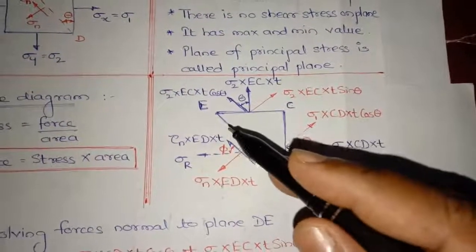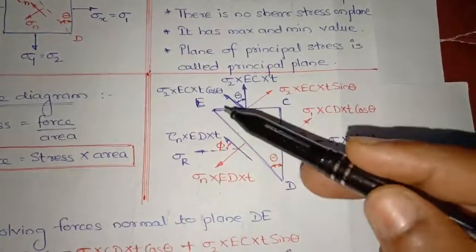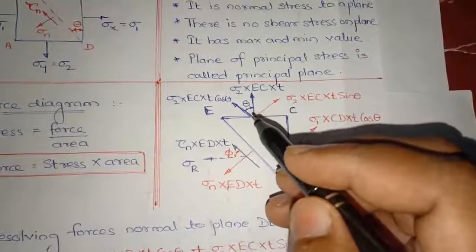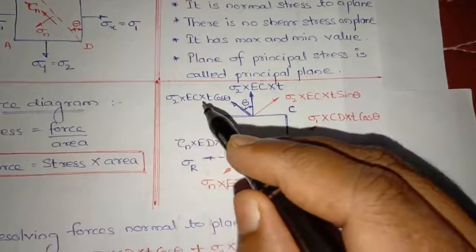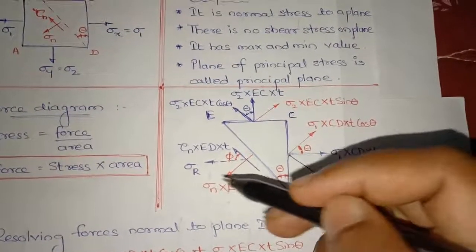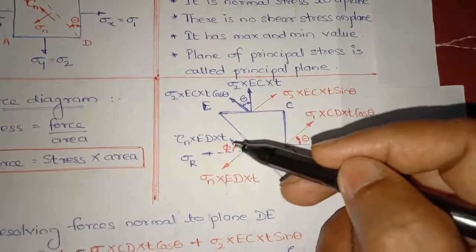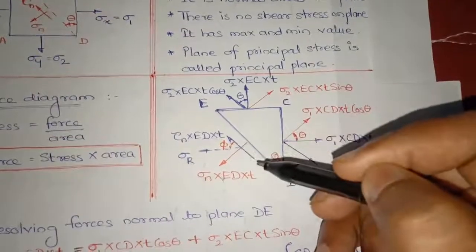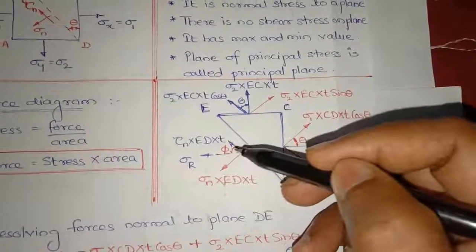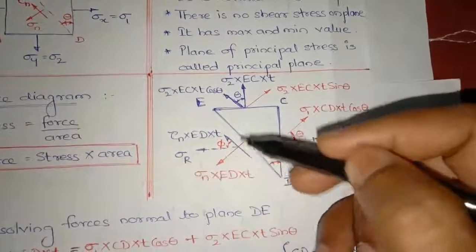Similarly, the force sigma 2 CE into t has components: sigma 2 CE t cos theta perpendicular and sigma 2 CE t sin theta parallel to plane ED. These are all the force components acting on plane ED. One is perpendicular and one is parallel to the plane ED. We will find the resultant of these two forces acting at an angle phi, and we will also calculate the orientation of this resultant with respect to DE.